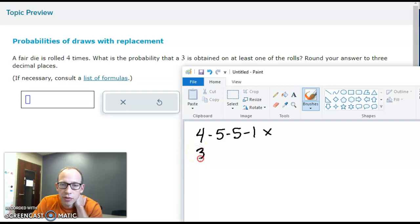If you had something like three, three, six, one, that one would count because you have at least one three.